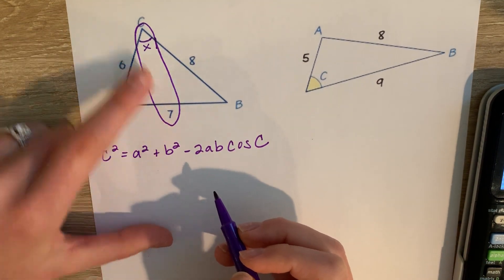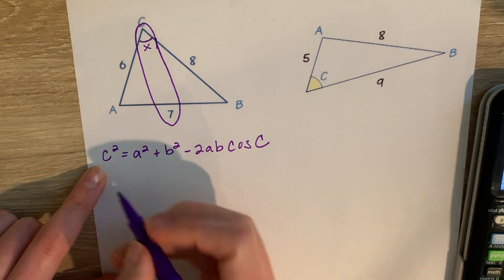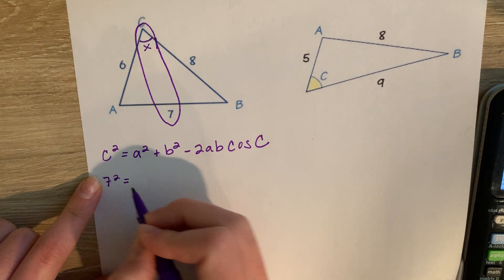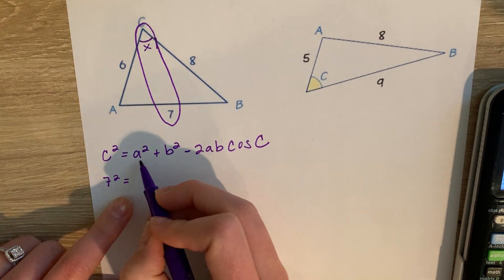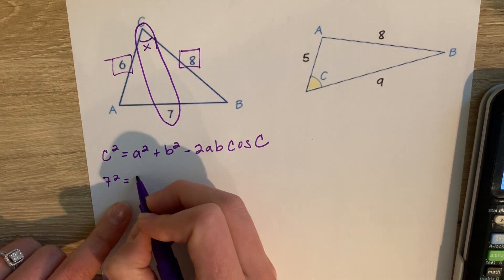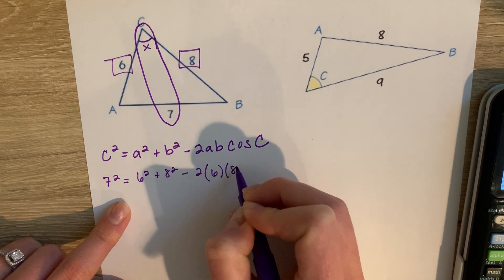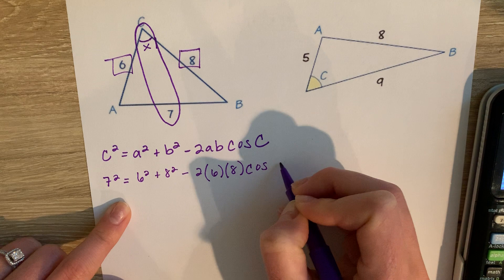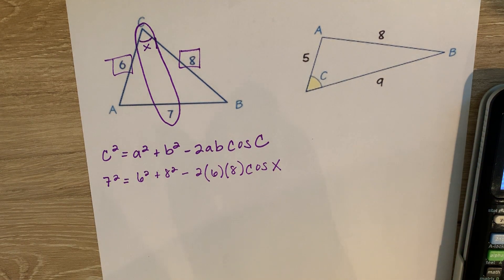That means 7 and x are going to go in for my c's. My lowercase c is my side. My uppercase c would be my angle. A and b are the other two sides in the triangle. So we get 6 squared plus 8 squared minus 2 times 6 times 8. So just like we did before, plug everything in where it should go.